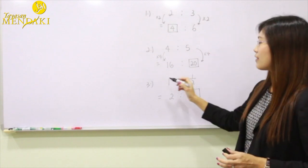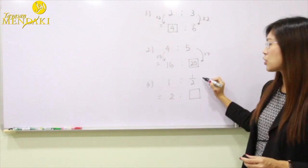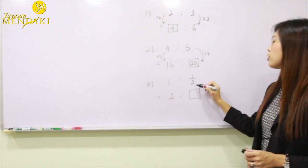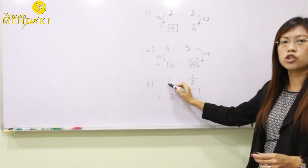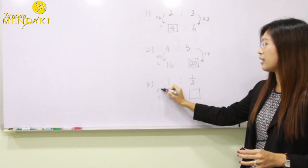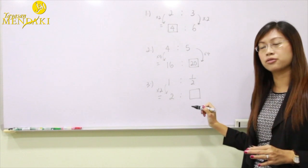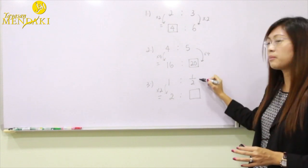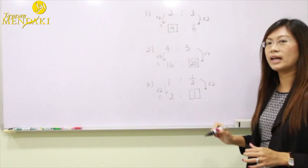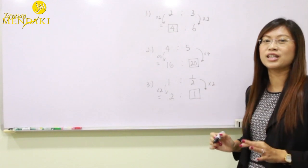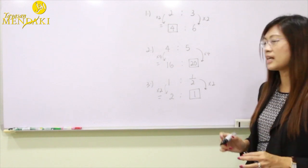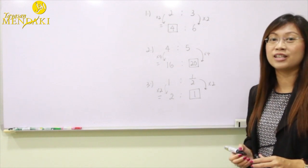For the third example, we have one is to half. To change one to two, we multiply by two. Similarly, we multiply the half by two, which gives us one. Therefore, two is to one is the new equivalent ratio for one is to half.